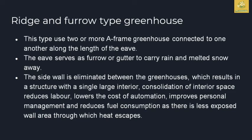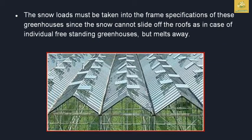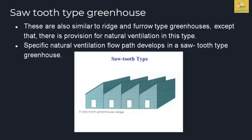In the rigid furrow type greenhouse, two or more A-frame greenhouses are connected along the length at the eave. They use a furrow or gutter to carry rainwater and melted snow away. The sidewall is eliminated between greenhouses, resulting in a single large interior space. This reduces costs, improves management, and reduces fuel consumption due to less exposed wall area. Snow cannot slide off roofs as with free-standing greenhouses but melts away through the furrows.